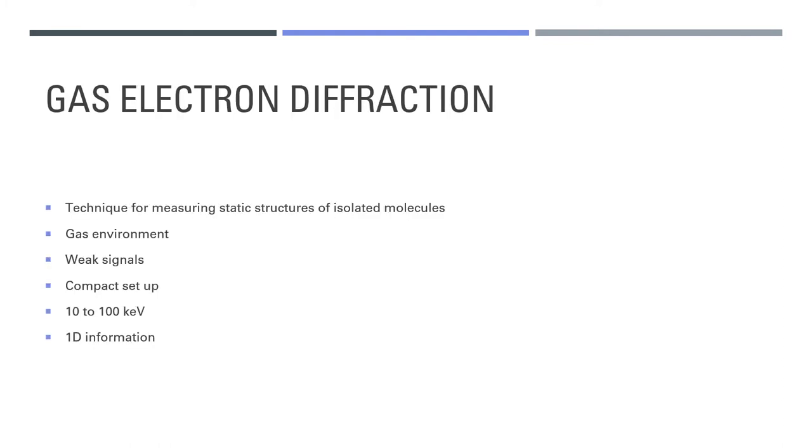Gas electron diffraction has been a standard technique for measuring static structures of isolated materials since 1930. Gas electron diffraction is so important because we live in a gas environment, so it's important to know how light, such as sunlight, interacts with gases in our atmosphere, such as carbon dioxide. From a technology view, a gas is easier to test than a condensed system, as a gas is much more isolated and it's easier to simulate models to compare with results. The challenge that's associated with gas electron diffraction is the weak signal it produces.